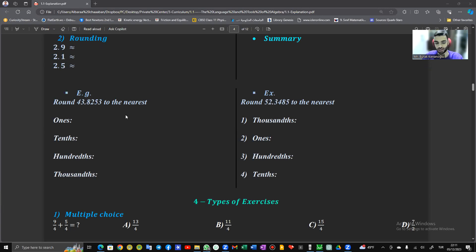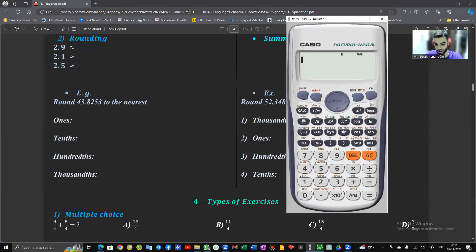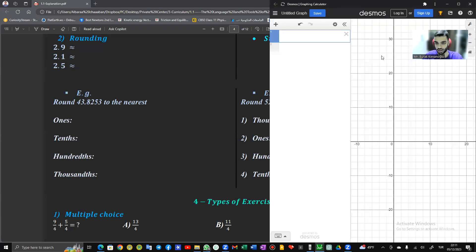Today we are going in the second video of our series of solving the most important exercises in the digital SAT using the modern and new methods by using the calculators, the Casio and the Desmos calculators. So we are going to solve today how can we round using the Casio calculator.